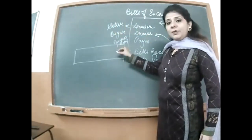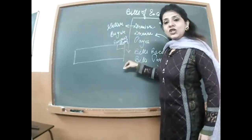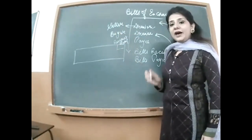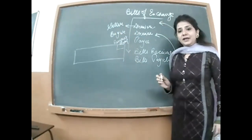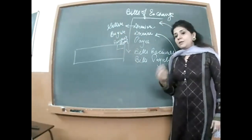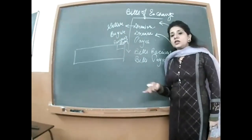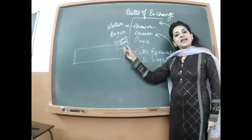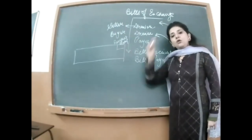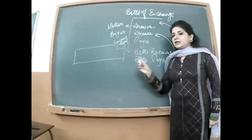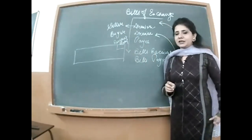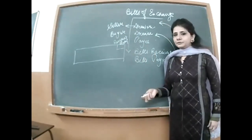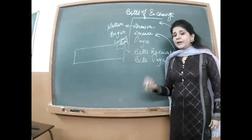Revenue stamp lagakar, corner pe, buyer sign karta hai. Kal ko buyer agar deny kare ki maine payment nahi karni aur excuses banaye, toh seller ke paas right hai ki voh document lekar jaaye aur uske against case bhi file kar sakta hai ki voh bill ki payment nahi kar raha.